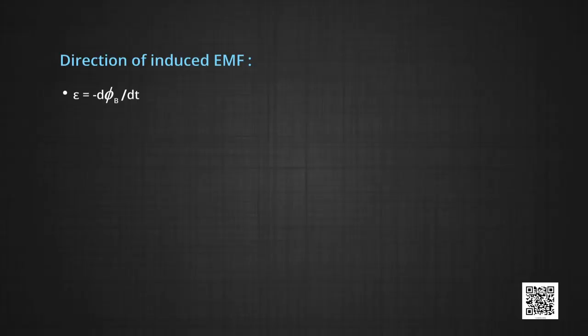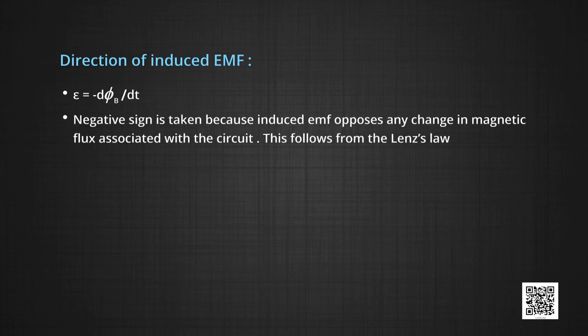Direction of the induced EMF: E = −dΦ_B/dt. The negative sign is taken because the induced EMF opposes any change in the magnetic flux associated with the circuit. This follows from Lenz's law, which will be discussed in module 2.